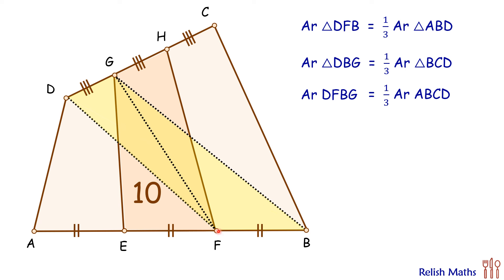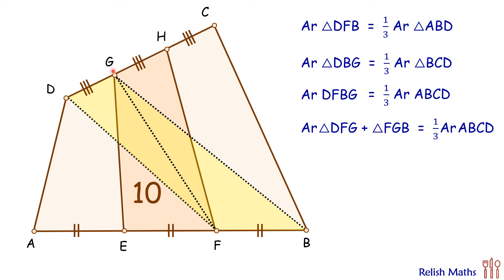Now let's join points G and F. This yellow region is the area of triangle DGF plus FGB, which equals one third the area of the full quadrilateral. Now triangles DFG and GFH have equal base and a common vertex, so their areas are equal. So we can replace DFG with GFH.